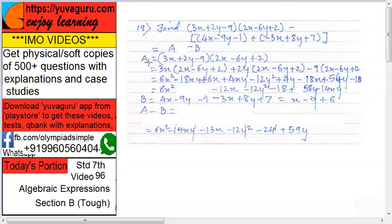Let's solve A first. A is 3x plus 2y minus 9, into 2x minus 6y plus 2. Now, how to solve this?